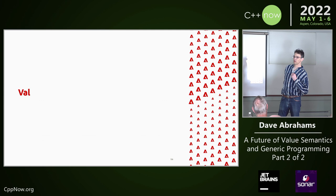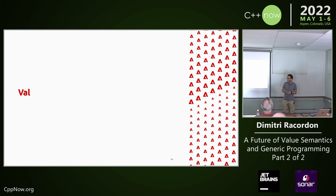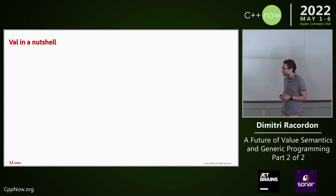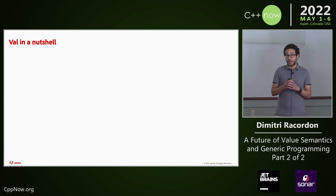Thank you very much for giving me this opportunity. It's a bit tough to go after Dave. I wanted to talk about this programming language that we've been developing — it's called VAL. The basic idea behind VAL is: what happens if you have a programming language that has nothing but mutable value semantics?